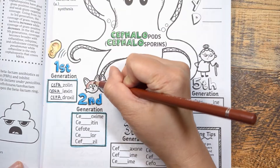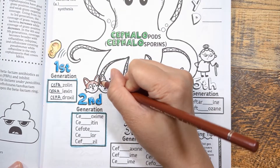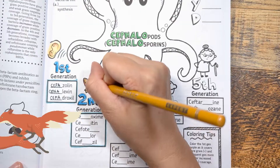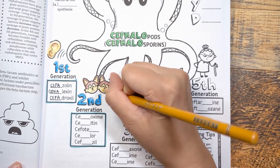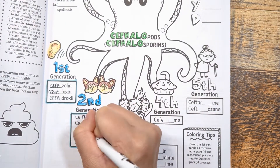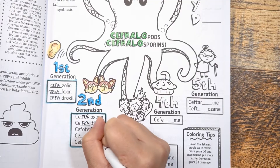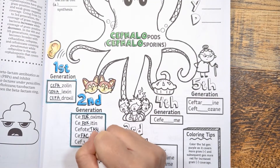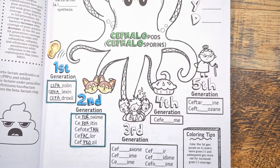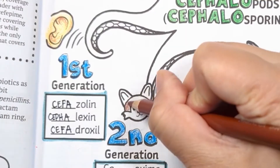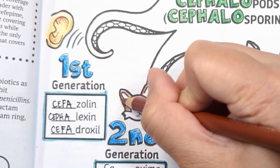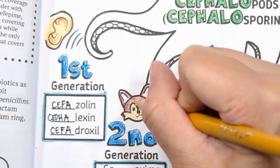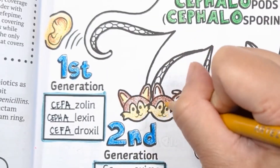For second generation cephalosporins, we have to get a little creative. Remember this mnemonic: two furry foxes, tan faces like pros. Two stands for second generation, furry is for cefuroxime, foxes stands for cefoxitin, tan is for cefotetan, faces is for cefaclor, and pros is for cefprozil. Let's go over that again a couple of times in our heads as we color in this visual with the two furry foxes with tan faces on the second tentacle for second generation.